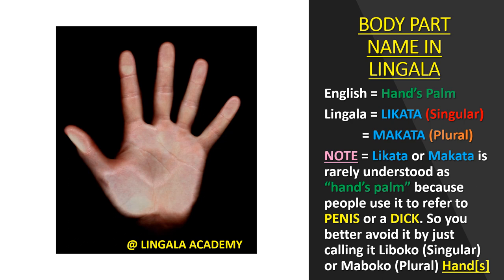Hand palm is Likata — singular, plural Makata. However, Likata is rarely used as hand palm because people in Congo use it to refer to the penis. So you better avoid this word and just call it Loboko — that's more formal. Loboko is singular and Maboko is plural, meaning hand.